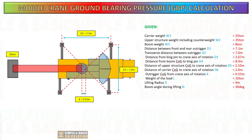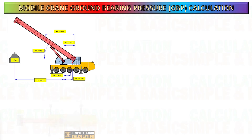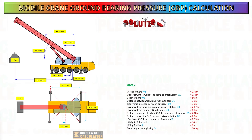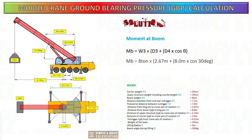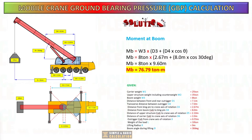Please take note of all the formulas and have your calculator ready so you can follow along with the computation. Now let us start to calculate the boom moment. To get this, you need the weight of the boom, the distance of the kingpin to the crane center of rotation, the boom center of gravity distance to the kingpin, and the boom angle. Please follow the formula as shown.